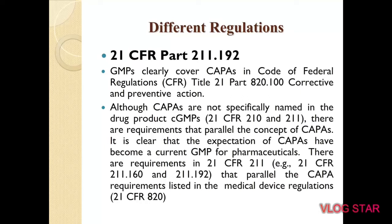In 21 CFR Part 211.192, GMP clearly covers CAPA in the Code of Federal Regulation titled 21 CFR Part 820.100 as corrective action and preventive action. Although CAPA is not specifically named in the drug product CGMP, in 21 CFR 210 and 211 there are requirements that define the parallel concept of CAPA. It is clear that the expectations of CAPA have become a very important requirement of current CGMP in pharmaceuticals, with requirements in 21 CFR 211.160 and 211.192 that parallel the CAPA requirements listed in the medical device regulations.